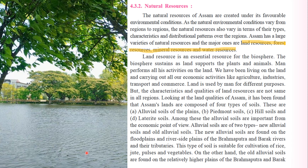The most important resource is land, because land supports plants, animals, and humans. Humans perform all their activities on land — almost all economic activities like agriculture take place on land, we build industries on land, and transport and commerce occur mostly on land. The characteristics and qualities of land resources are not the same in all regions. Looking at the land qualities of Assam, its land is divided into four types of soils: alluvial soils of the plains, hill soils, forest soils, and terai soils.